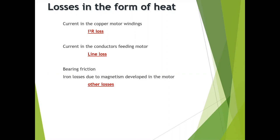You see how we have three different types of losses in the form of heat depending on what part of the circuit we're talking about. When we get to the specifics, I squared R losses refer to the copper motor windings, line loss is the conductors feeding the circuit, and bearing friction and other types of losses that develop due to heat would just be other losses.